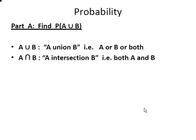Let's look at part one and take a moment to be clear about the notation. This is A union B — that means A or B or both. This is A intersection B, and that means both A and B together; not one or the other, it has to be both.